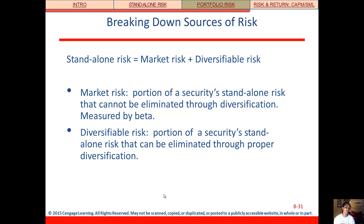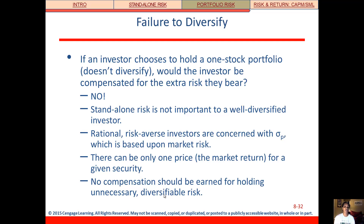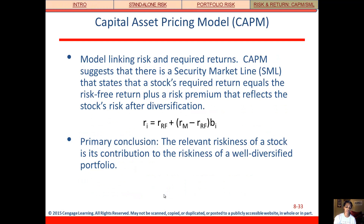Standalone risk equals market risk plus diversifiable risk. Market risk is the risk you're exposed to simply because you're invested in the stock market — everyone is exposed to it, but by different amounts. Diversifiable risk is the risk you can eliminate by adding more securities to your portfolio. If you don't diversify and just hold a one-stock portfolio, would you be compensated for the extra risk? No — because you can diversify and get rid of that diversifiable risk. A rational investor would be concerned with portfolio risk, knowing they can bring it down from 35% to 20%, and they're not going to receive compensation for holding just one security.